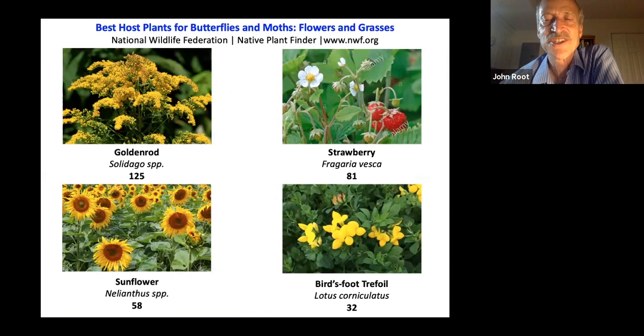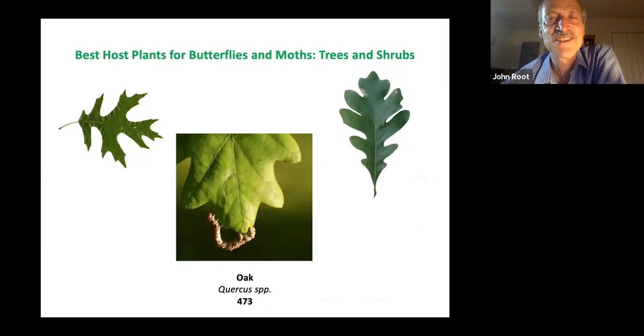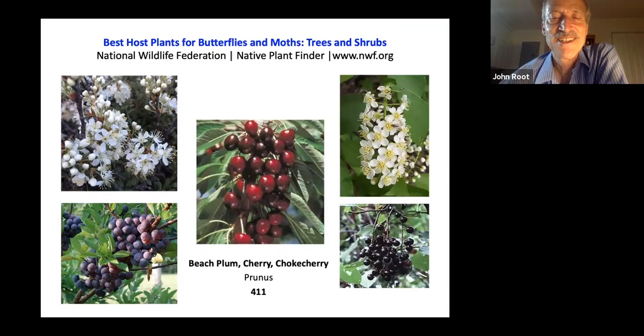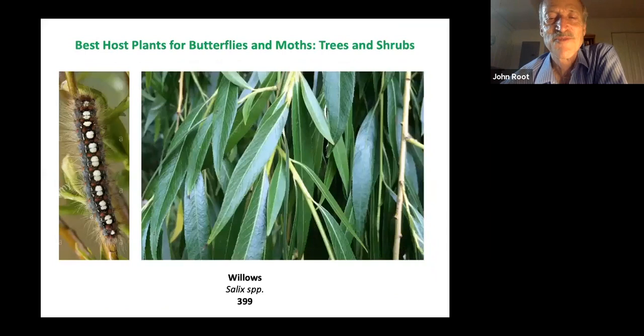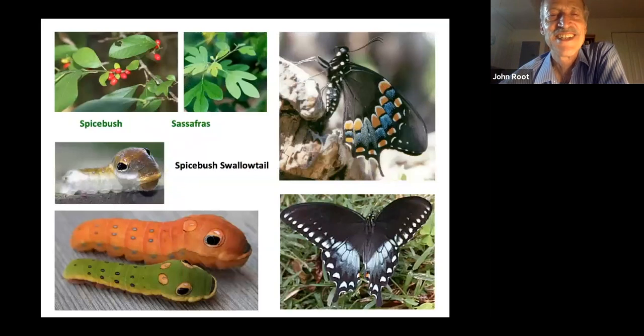There's nothing like the trees and shrubs — a stunning 473 different species of moths and butterflies are found on an oak tree, and 411 different species on the Prunus genus: beach plum, cherry, choke cherry — anything in the prunus genus. Willows are very important not only as a host plant, but also as a pollinator plant in the spring. Birch is another winner.